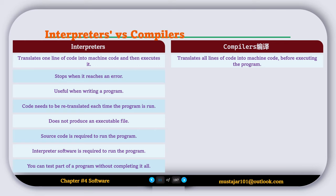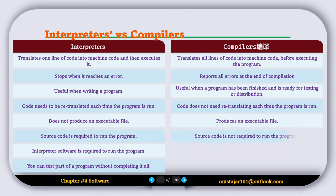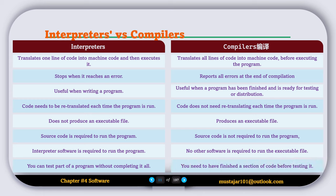Compilers translate all lines of code into machine code before executing the program and report all errors at the end of compilation. They are useful when a program has been finished and is ready for testing or distribution. Code does not need retranslation each time the program is run. The compiler produces an executable file, source code is not required to run the program, and no other software is required to run the executable file. You need to have finished a section of code before testing it.